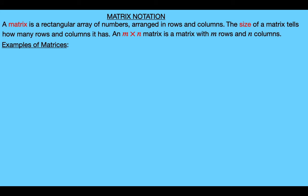Let's look at some examples so you can get an idea of what matrices look like. Here's an example of a matrix labeled A1. Usually matrices are represented by capital letters — that's just the notation. The rows of this matrix are the three horizontal lines. The first row contains the elements 3, 2, and 4. The second row contains 5, 0, 7. And the third row contains 0, 3, and 6.